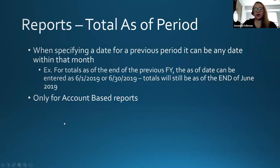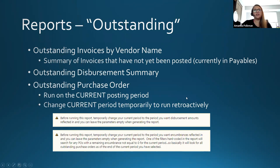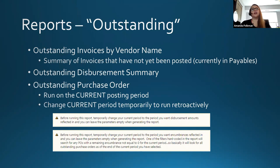The next thing to talk about with reports is outstanding reports — this is another category. These work a little bit differently than your standard transaction-based where you just plug in a range. The first one, outstanding invoices by vendor name, is pretty straightforward — that one will give you a summary of invoices that have not yet been posted. When you're pulling that outstanding invoices report, it's going to show you what is currently in your payables page — those invoices sit in payables until posted over to disbursements.